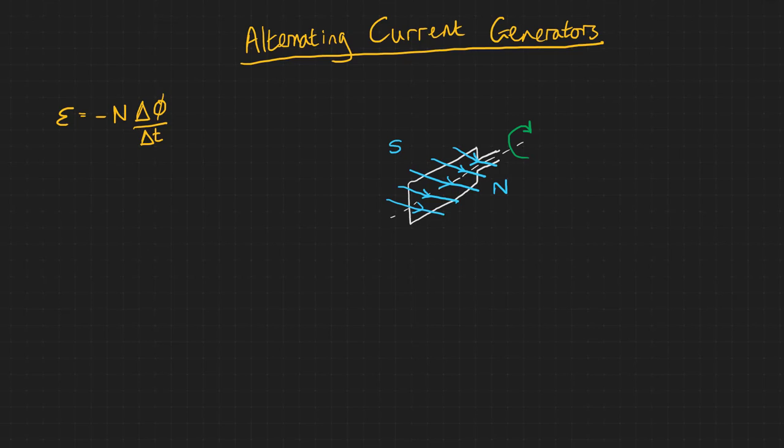In my previous video I introduced Faraday's law which states that an induced EMF is equal to the rate of change of flux linkage. But we only really thought about a single loop of wire moving into and out of a magnetic field, and that's not a very realistic generator.